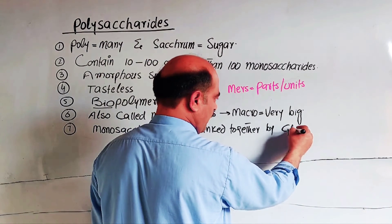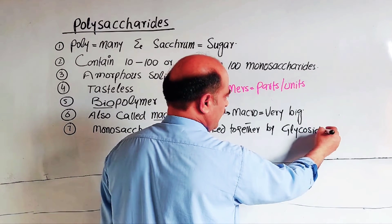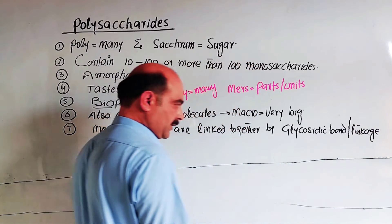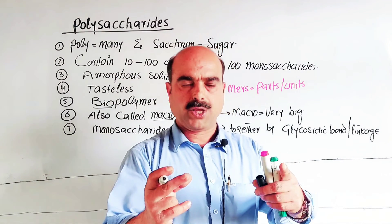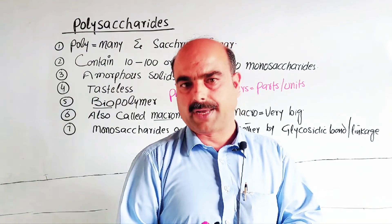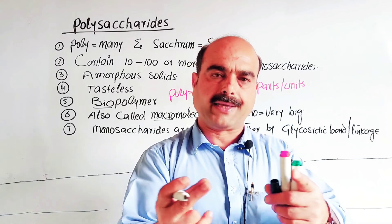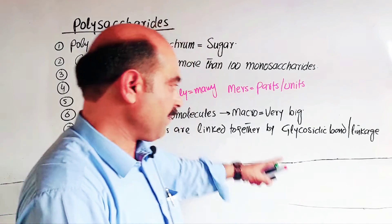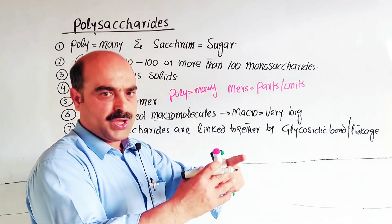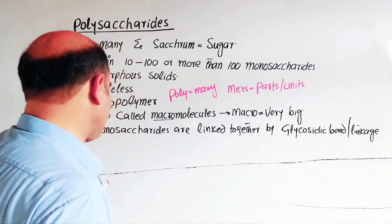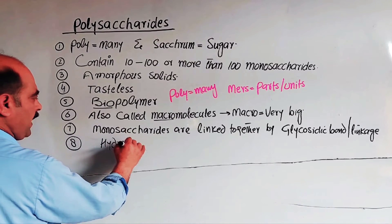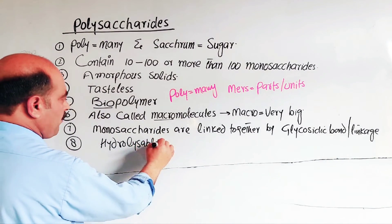Another important property is the glycosidic bond, also called glycosidic linkage. The glycosidic bond is the bond formed when two monosaccharide units are combined together, followed by the removal of a water molecule. In polysaccharides, glycosidic bonds form large, huge structures.